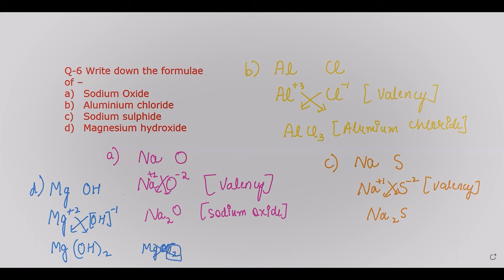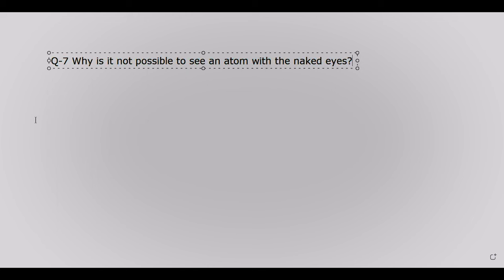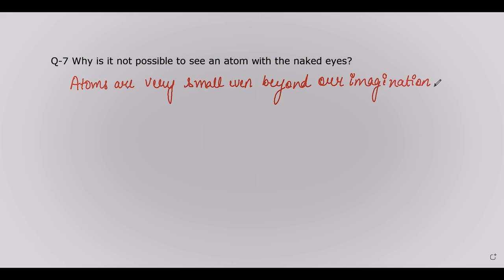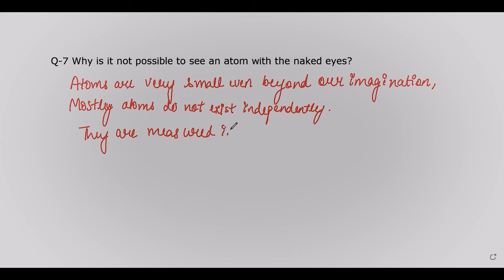Question number seven: why is it not possible to see an atom with the naked eye? Matter is made up of small particles called atoms. Atoms are very small, even beyond our imagination, and they cannot be seen through naked eyes. Their radius has been calculated in nanometer units. Also, atoms mostly do not exist independently, which is why it is not possible to see atoms with the naked eye.